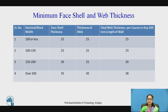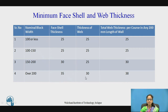This is the table which consists of the minimum face shell and web thickness. The nominal block width of 100 mm or less has a face shell thickness of 25 mm and a web thickness of 25 mm. The total thickness of the web per course in any 200 mm length of the wall is 25 mm. When the block width is over 200 mm, the face shell thickness is 35 mm and the web thickness increases from 25 mm to 30 mm. This is the table of face shell thickness.